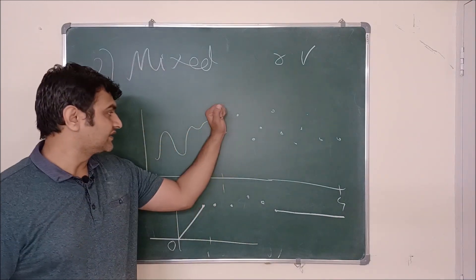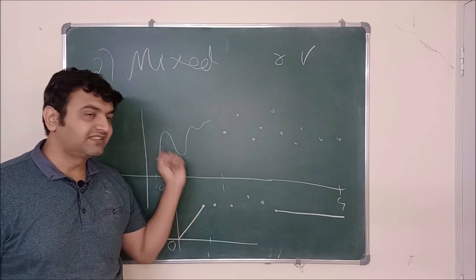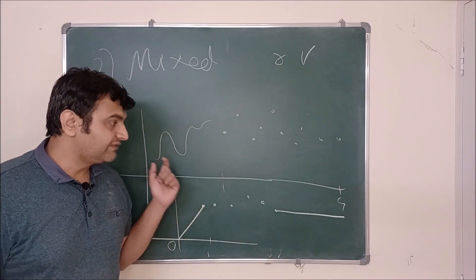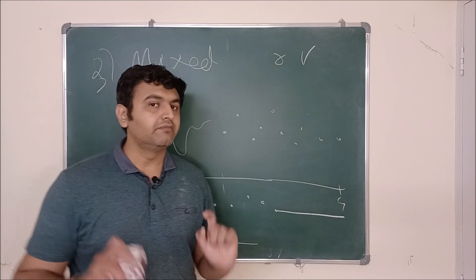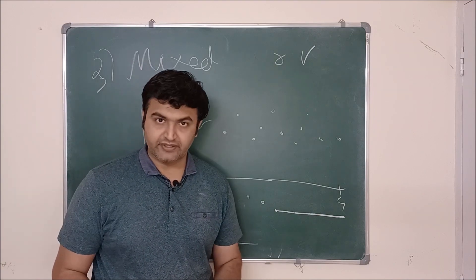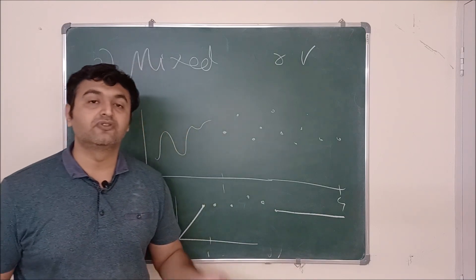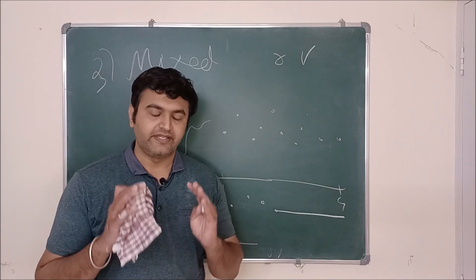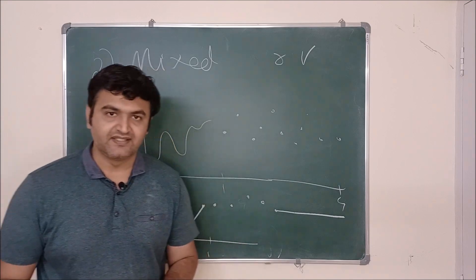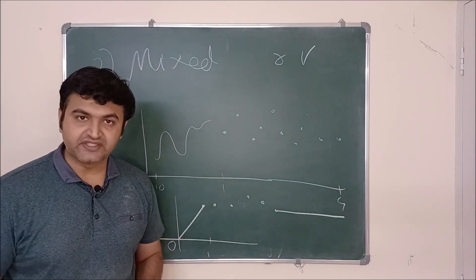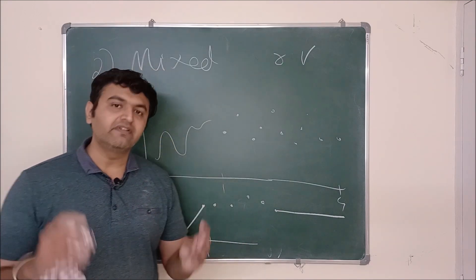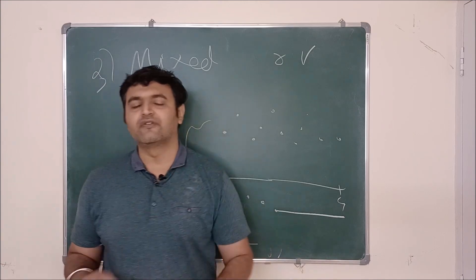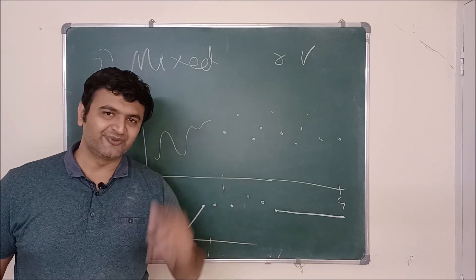In summary: when a random variable takes finite or countable values, it's a discrete random variable; when it takes continuous values over an interval, it's a continuous random variable; and when it takes both, it's a mixed random variable. In coming lectures we will study each type in depth. I hope this basic introduction is clear — if you have any doubt, ask in the comment section, and don't forget to like, share, and subscribe.